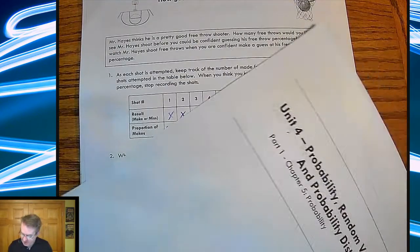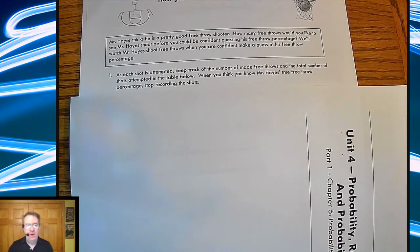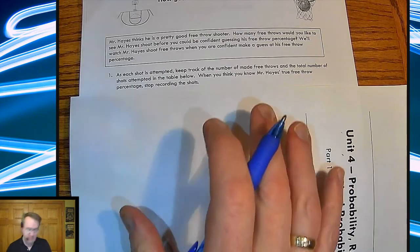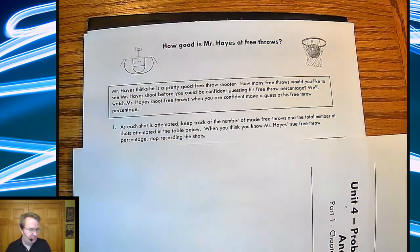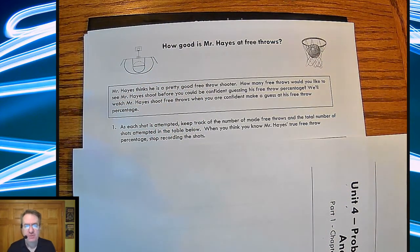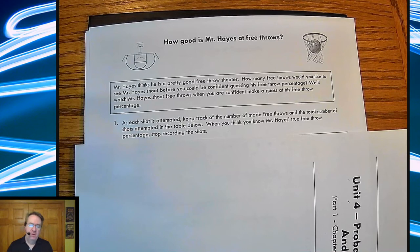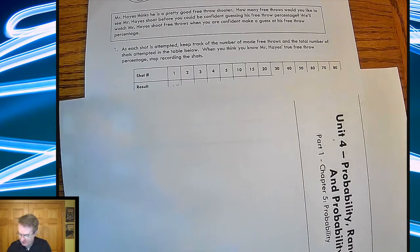So the setup here was you're going to see how well or how long you feel comfortable needing to watch somebody make free throws in this case until you felt comfortable about being able to say they're probably at that percentage. I had originally recorded a video for this. Editing was a problem. So I'm going to use the applet that's down below as well as a copy of these notes for you guys to use. I had a little bit of recording issues, so I'm going to apologize up front.